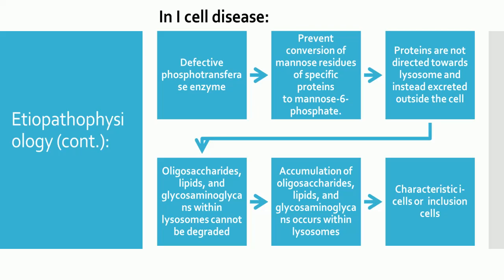The defective phosphotransferase prevents conversion of mannose residues of specific proteins to mannose-6-phosphate. Hence, without this marker, the proteins are not directed towards the lysosome and are instead excreted outside the cell. Lysosomes cannot function without these proteins. As a result, oligosaccharides, lipids, and glycosaminoglycans cannot be degraded in the lysosome.